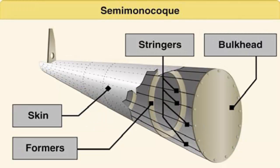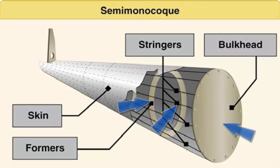Semi-monocoque construction uses a substructure to which the airplane's skin is attached. The substructure, which consists of bulkheads or formers of various sizes and stringers, reinforces the skin by supporting some of the bending stress from the fuselage.